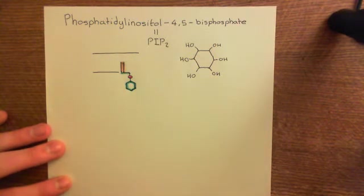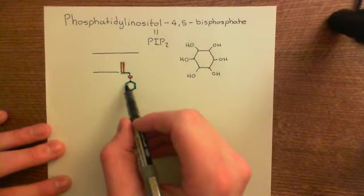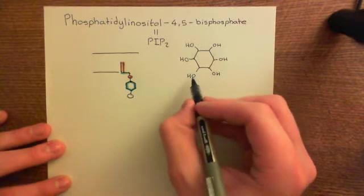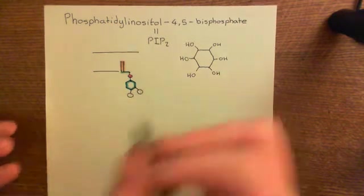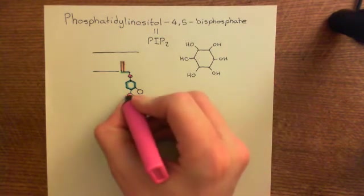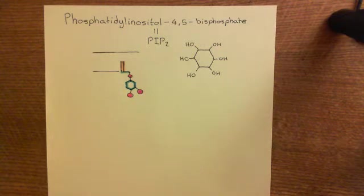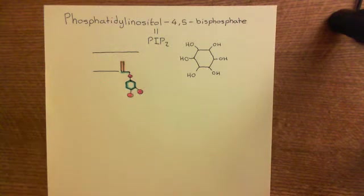To get from phosphatidyl inositol to PIP2, we need phosphatidyl inositol 4,5-bisphosphate. Numbering the carbons of the inositol ring starting from one, we add a phosphate group via a phosphoester link to the fourth carbon and another phosphate group to the fifth carbon. So PIP2 is just a phospholipid with a bigger cytoplasmic head — it is a normal component of the phospholipid bilayer, and it is the substrate that phospholipase C beta acts on.